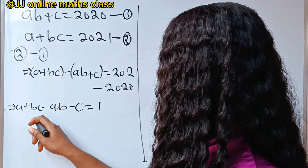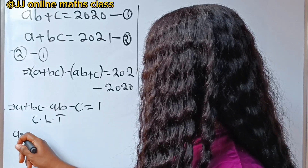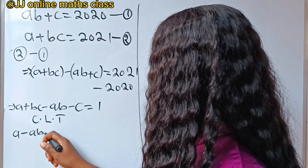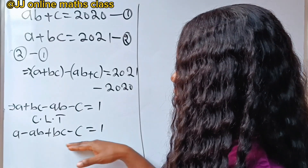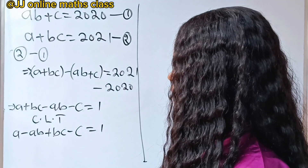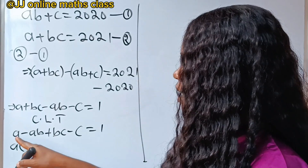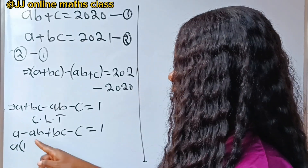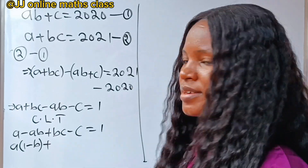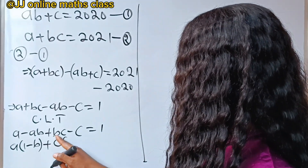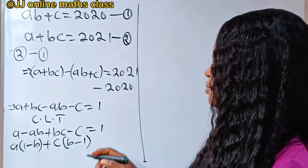Now, let's collect like terms. You will have A minus AB, plus B times c, minus C, is equal to 1. Let's factorize by grouping. A and AB have A in common, so factorize A out: A times (1 minus B). Then B and C have C in common, so factorize C out: C times (B minus 1). This equals 1.